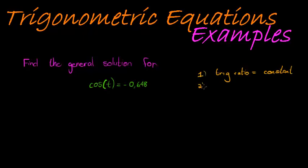The second step would be our reference angle. That's what we get using our inverse functions. Our reference angle is the inverse function of negative 0.648. Now, you notice that cos(t) gives me a negative answer, so that means t must be a value in one of the quadrants where cos is negative. In which quadrants is cos negative?